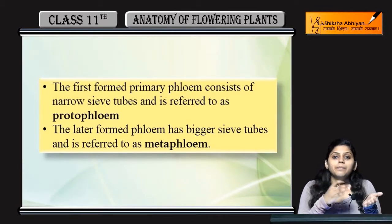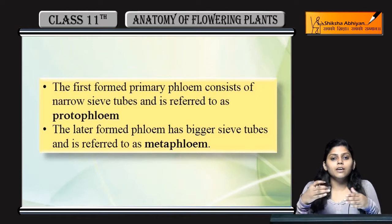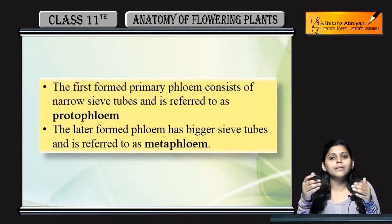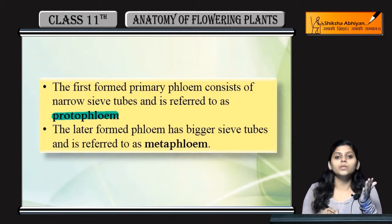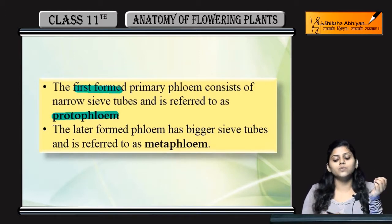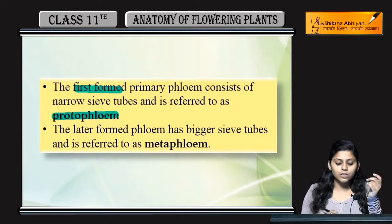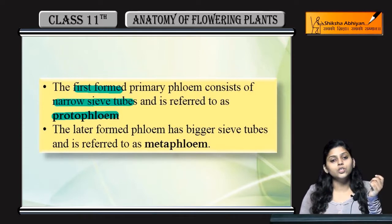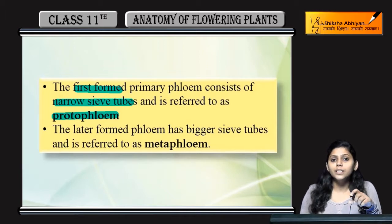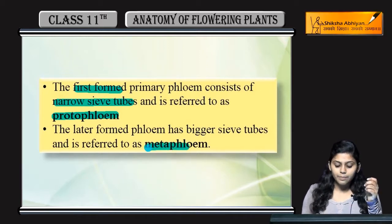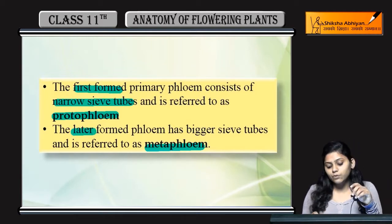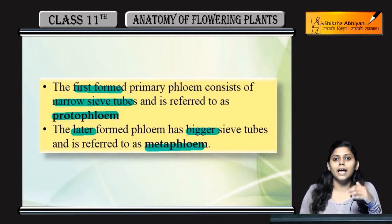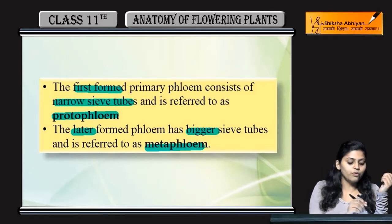As we have seen Metaxylem and Protoxylem, the protofloem and metafloem are formed first. Primary phloem consists of narrow sieve tubes; protofloem is narrow. If we talk about metafloem, they are formed later and their sieve tubes are bigger in size as compared to protofloem.